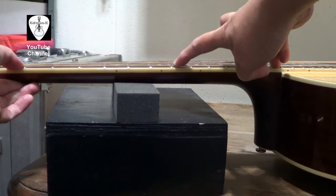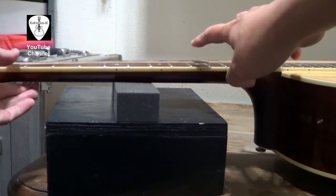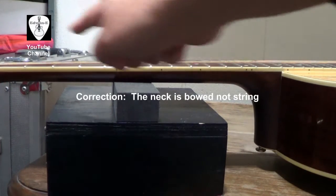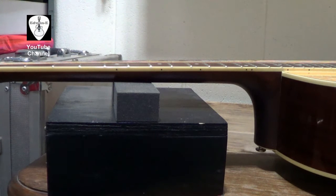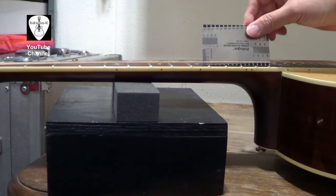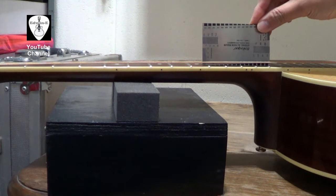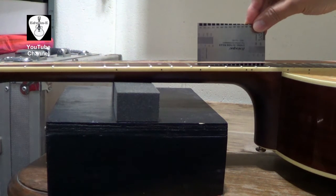adjust the truss rod to make it straight. To do that, there will also be an improvement on the string action. Right now it is about 3.4 or 3.5 millimeters on the twelfth fret.